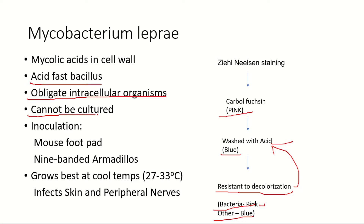One thing to remember here is that they cannot be cultured in any standard culture media because they are very slow-growing organisms. However, they can be inoculated into mouse foot pad and nine-banded armadillos. These bacteria prefer to grow at cool temperatures, around 27 to 33 degrees Celsius.